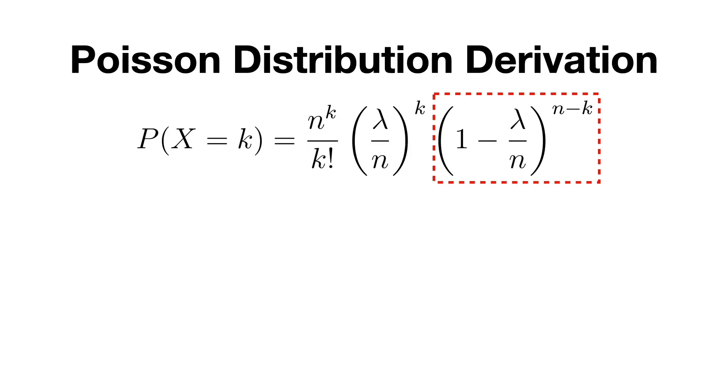Finally, we have the last term here, 1 minus lambda divided by n raised to the power of n minus k. Again, because n is much larger than k, we can ignore it and approximate the term as follows. Now, this is nothing else than the definition of the number e raised to a certain power. So, this term here is equal to e to the power of minus lambda.